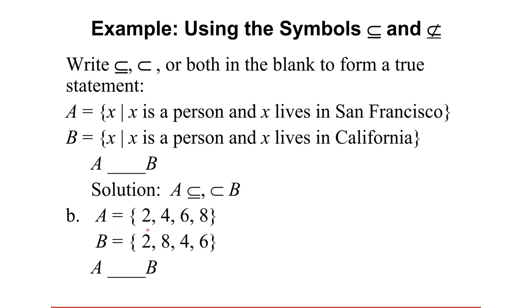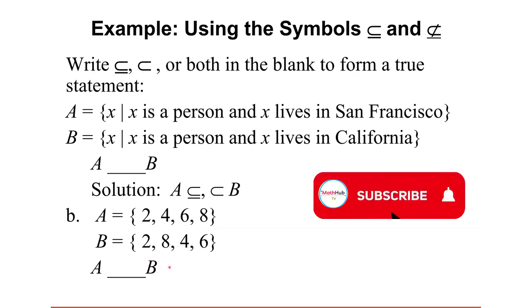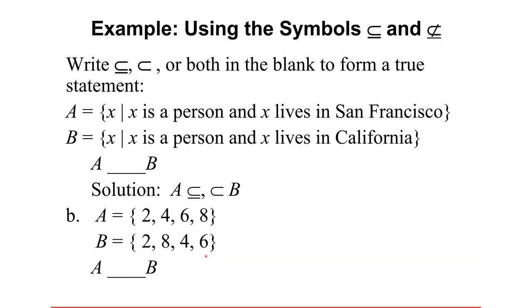Next, if A is defined as the set {2, 4, 6, 8} and B is the set {2, 8, 4, 6}, all elements in A are also in B, just in a different order. These two sets are actually equal — they have exactly the same distinct elements. Therefore, only the subset notation holds here, not the proper subset notation.